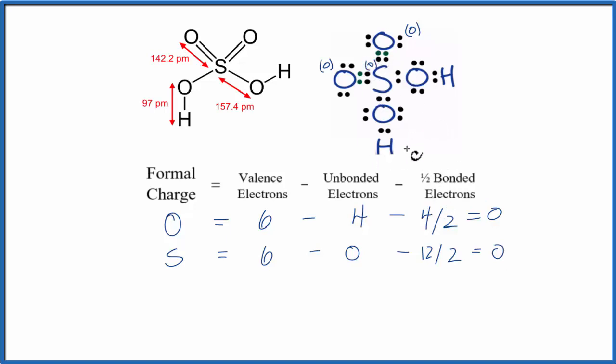Next, let's do this oxygen here with the hydrogen attached. Oxygen, group 16 on the periodic table, six valence electrons. And then this oxygen has four unbonded valence electrons, and then minus one half of the bonded. That's the two here and the two here, so we have four.